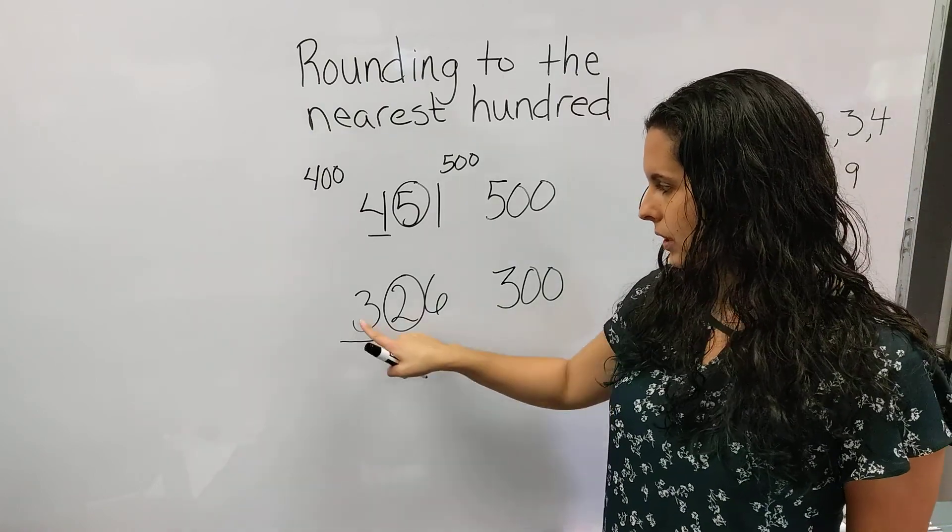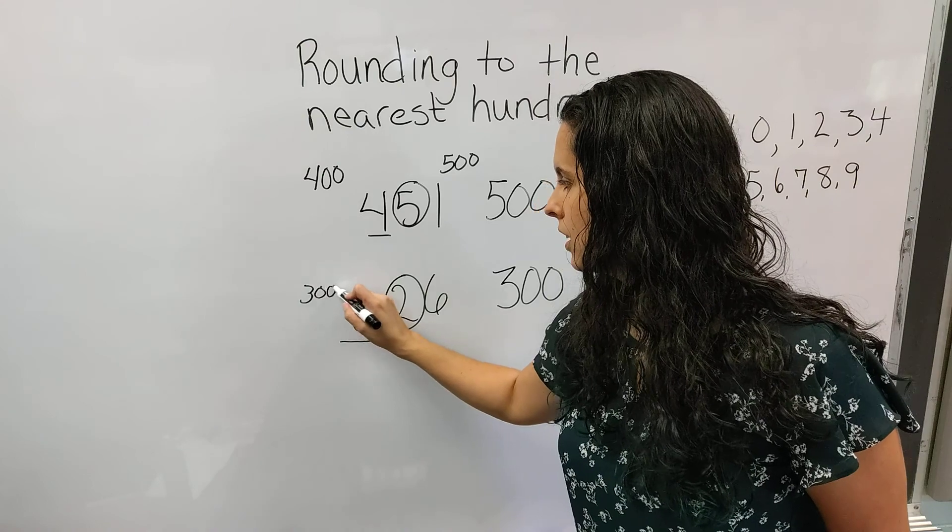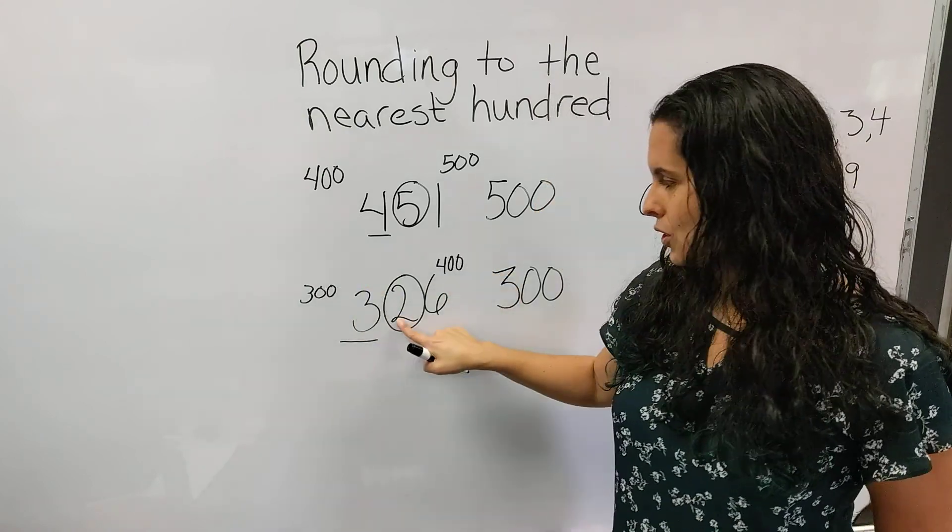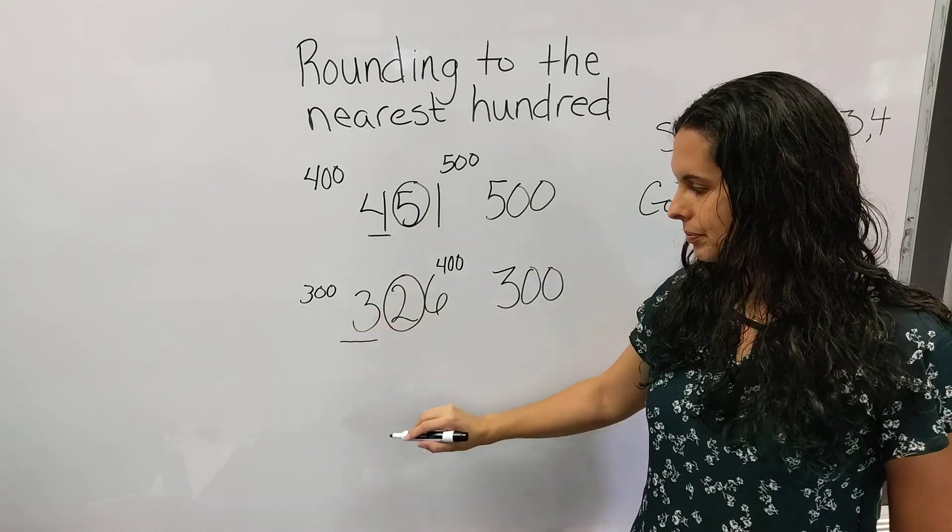On a number line, 326 is between the hundreds, 300 or 400. And 2 on a number line, we know is closer to 300.